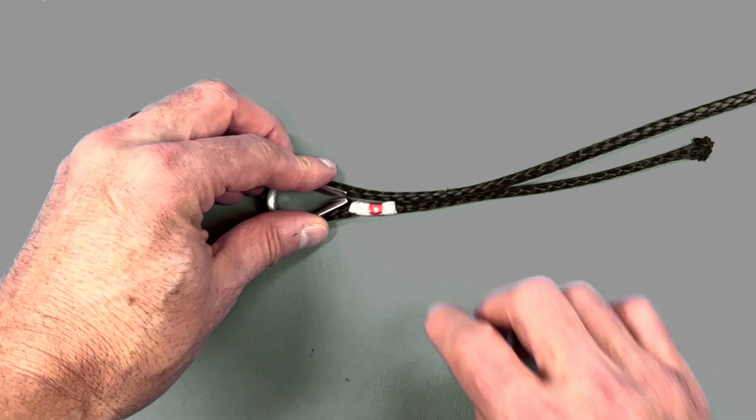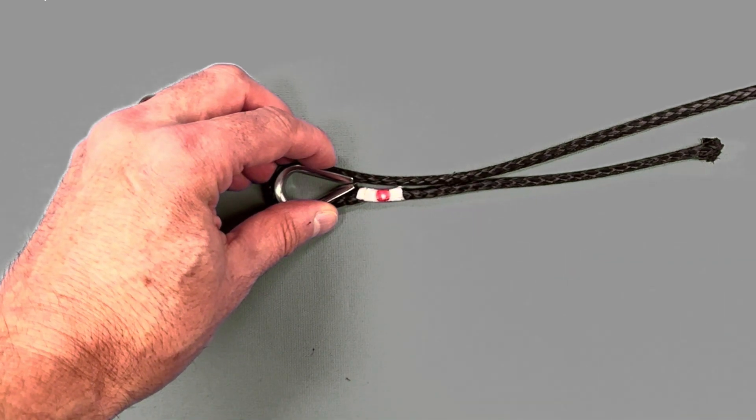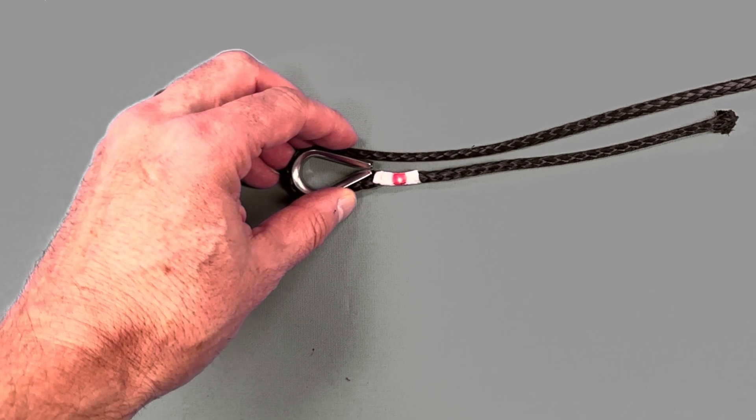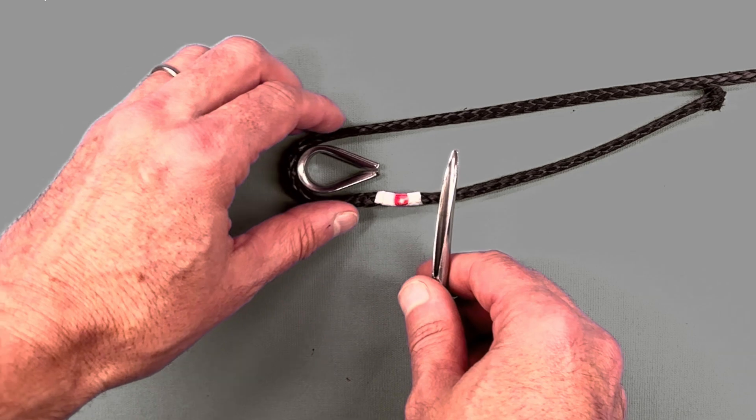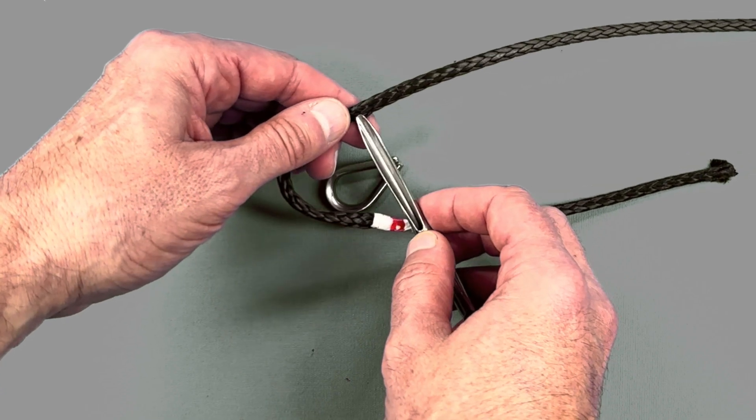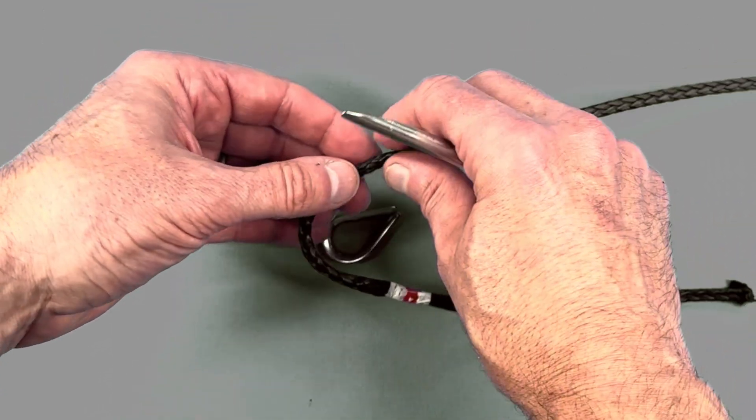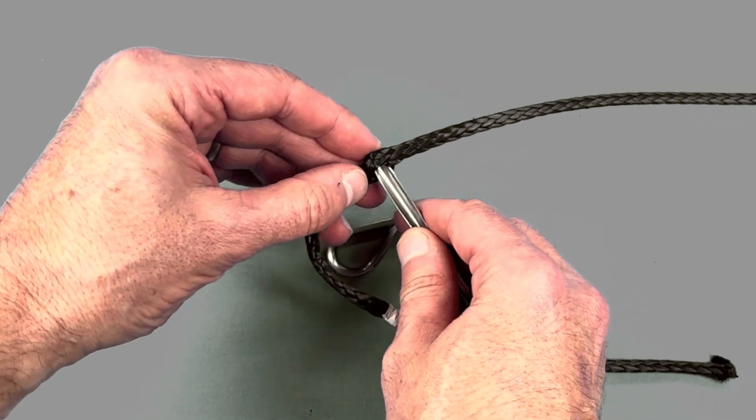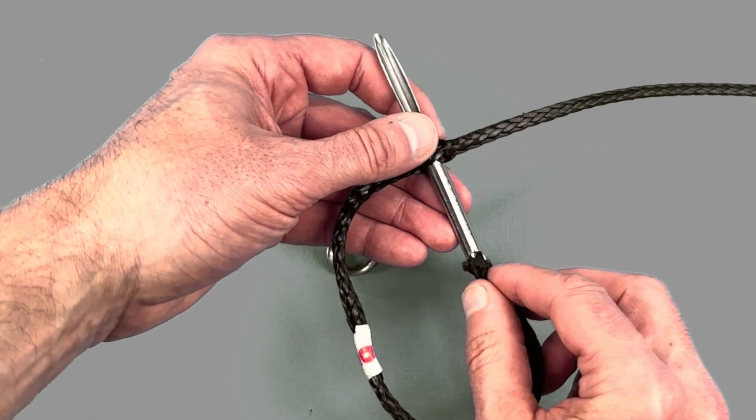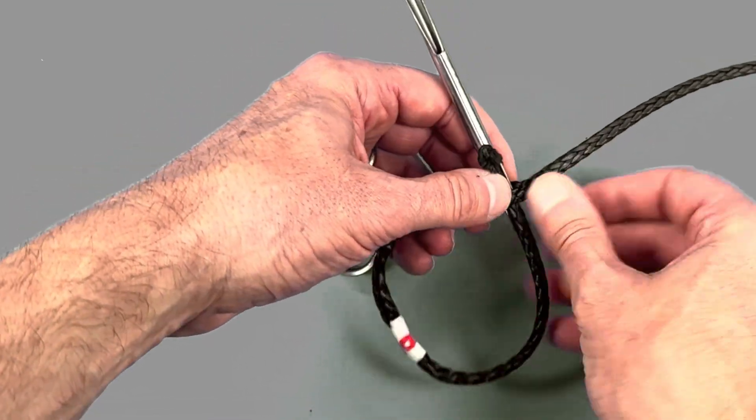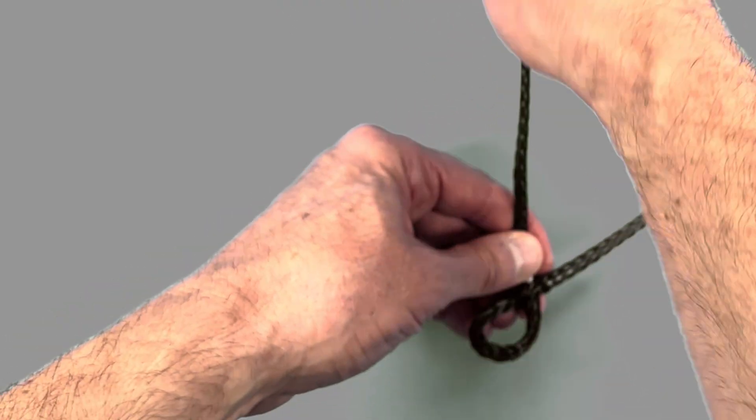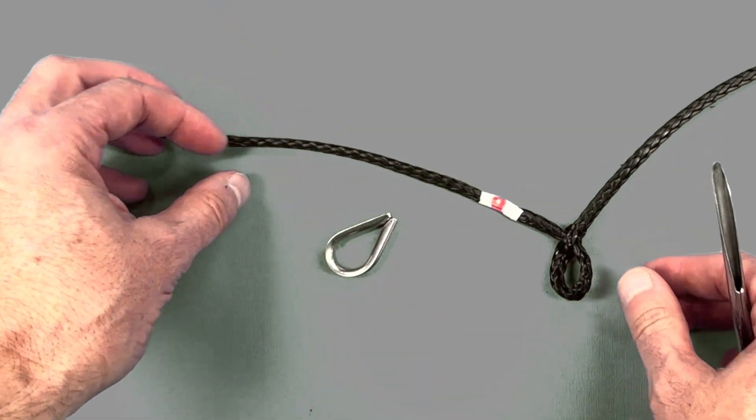Then take your thimble and line it up with the mark that you've made. We want to take our fid and put it through the standing end just past where it comes out from the thimble. For this one it may pay to just be a couple further threads down due to the tight way you make the splice. So once again loosen up the Dyneema, fid through the standing end making sure equal strands on each side of the fid.